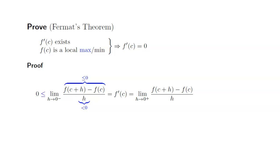How about the right-hand limit? Since h approaches zero from the positive side, h is actually positive. But the numerator is exactly the same. It's still going to be less than or equal to zero.